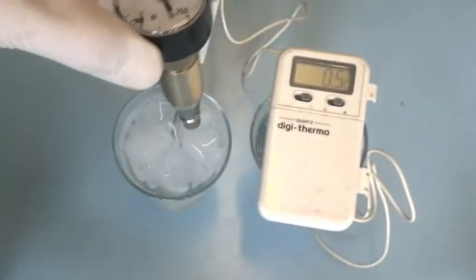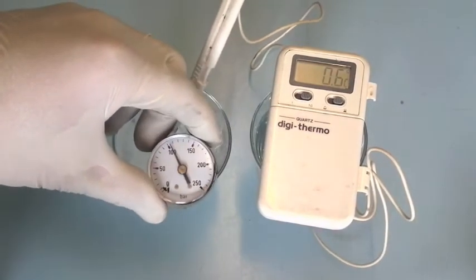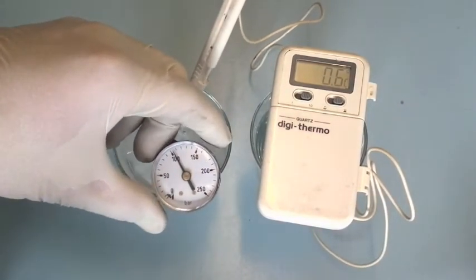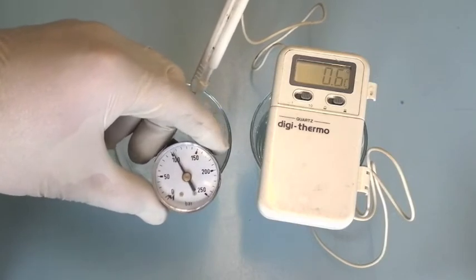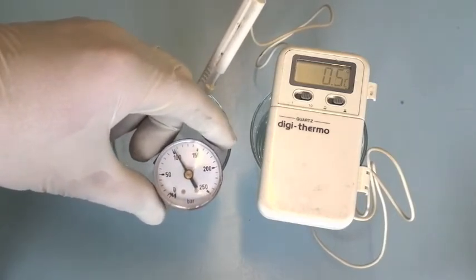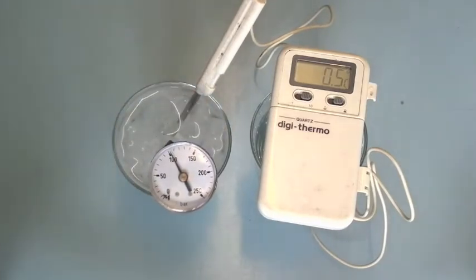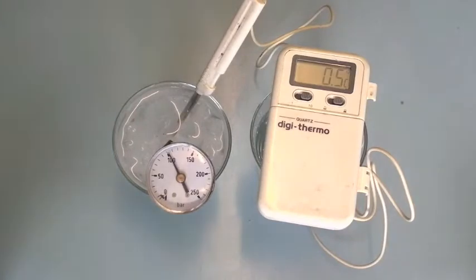So here we go. That's what it reads at the moment. If we put it into here, that's about 0.6 degrees. And now I'll look at the clock. I'll come back in five minutes time and we'll see what the pressure has dropped to.